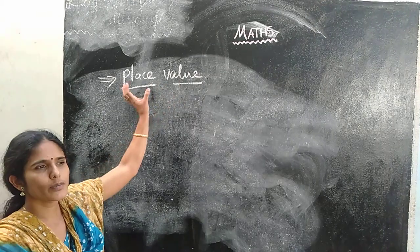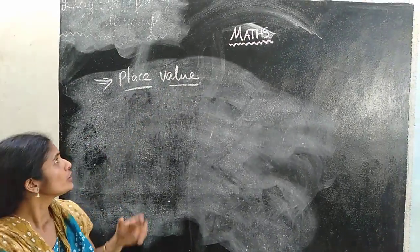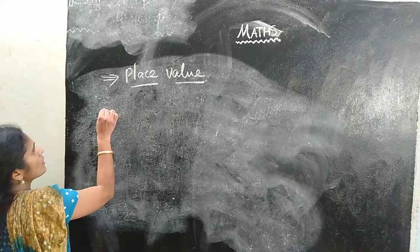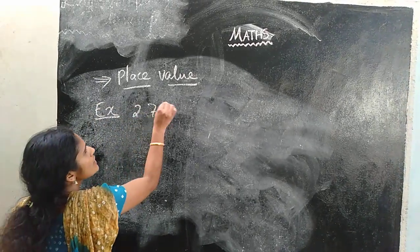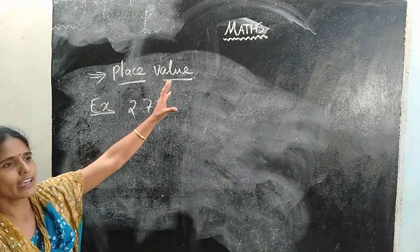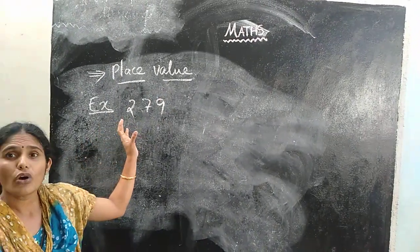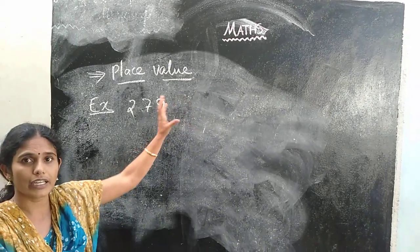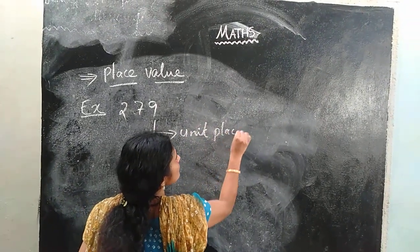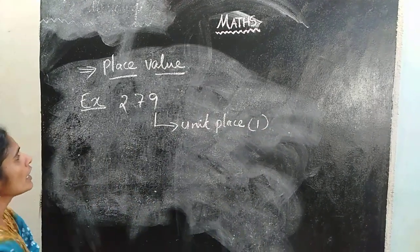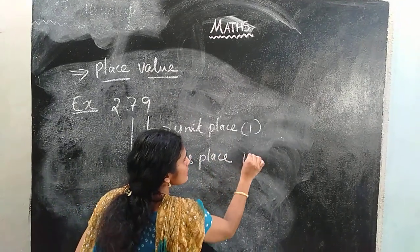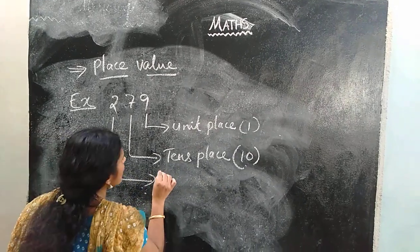The next topic is place value. Place value refers to the value of each digit based on its position in a number. For example, 279 — it is a 3-digit number. The 9 is in the units place or 1s place. The 7 is in the 10s place. And this 2 is in the 100s place.